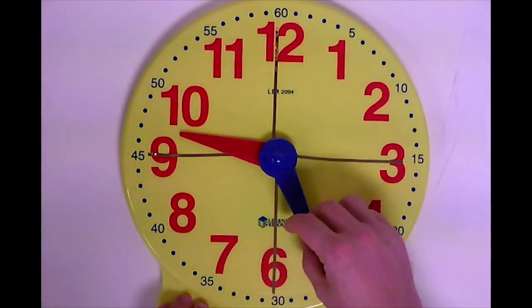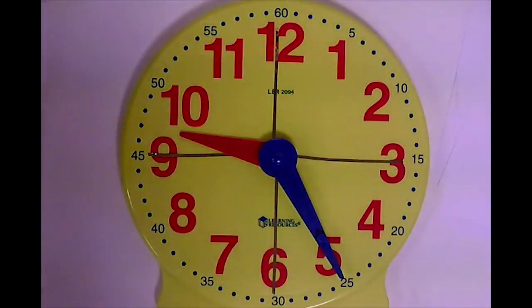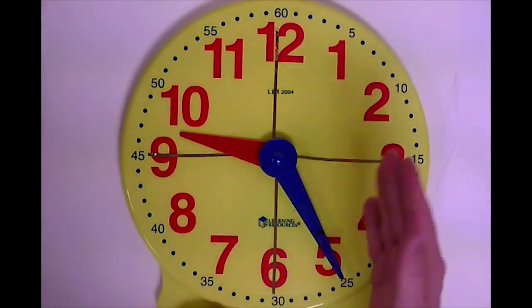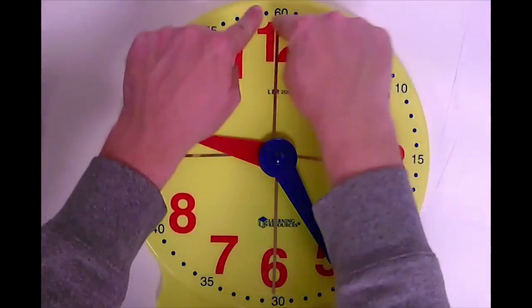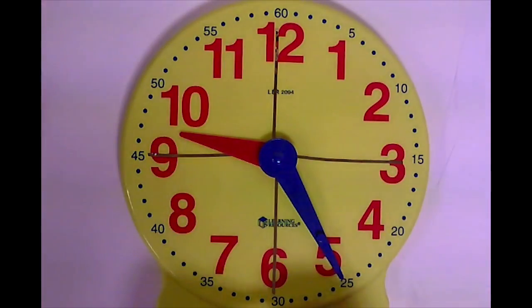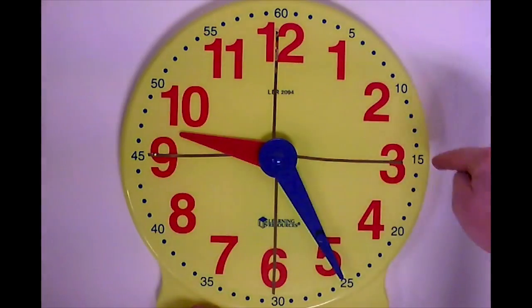Once you understand what clockwise and counterclockwise is, you have to know how to cut things into quarters. So on this clock, I've cut it into four quarters. So if I imagine this as a circle, which it is,